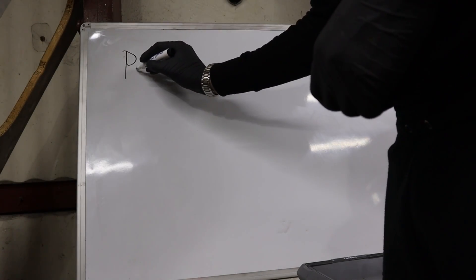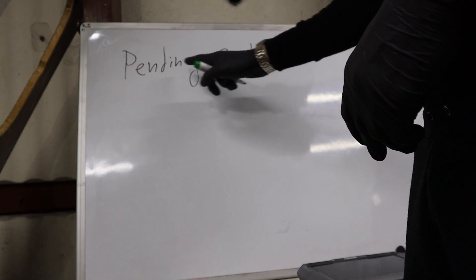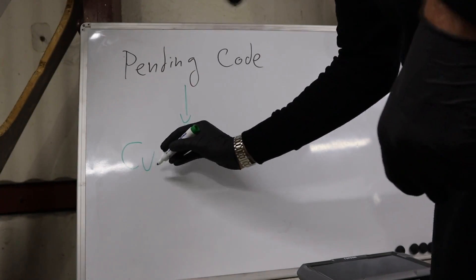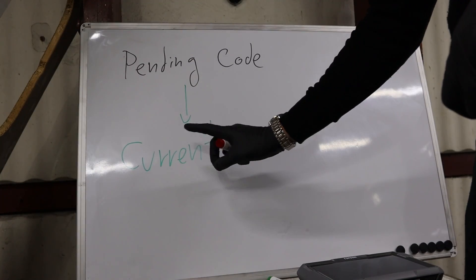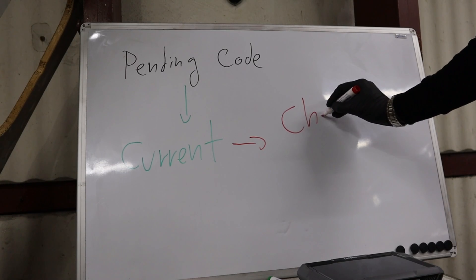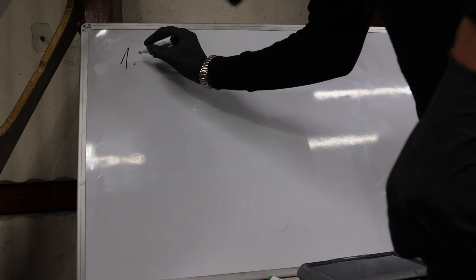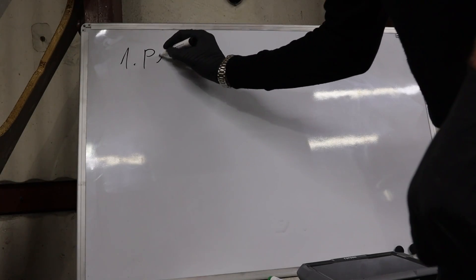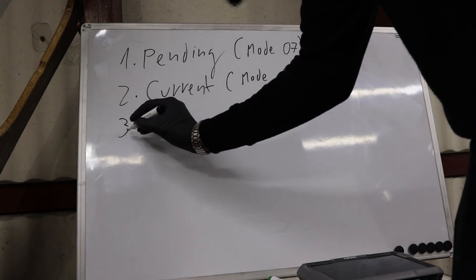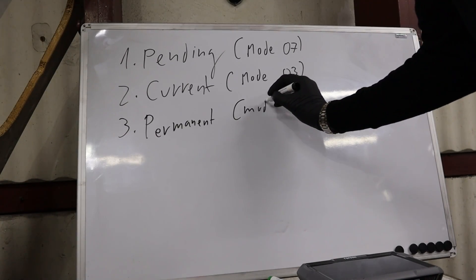First, you have pending codes. If the fault happens a certain number of times, the pending code will then change to a current code or confirmed code. And when the current code is present, it will trigger your Check Engine Light. So first we have pending codes, then we have current codes, and then you also have permanent codes, which is mode 10.